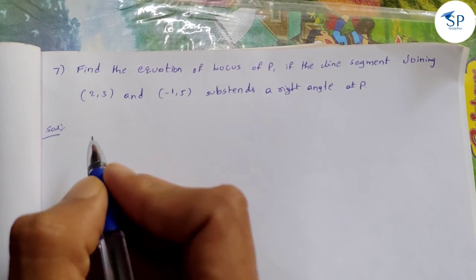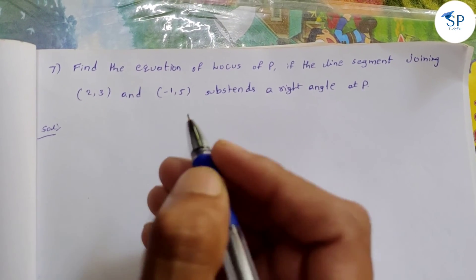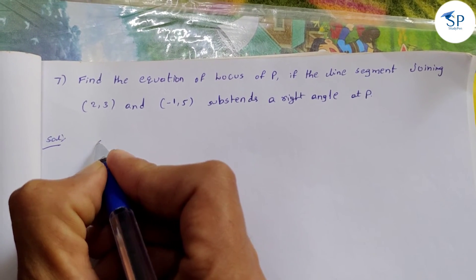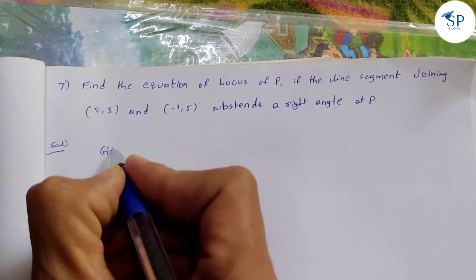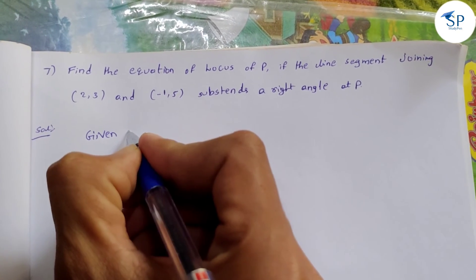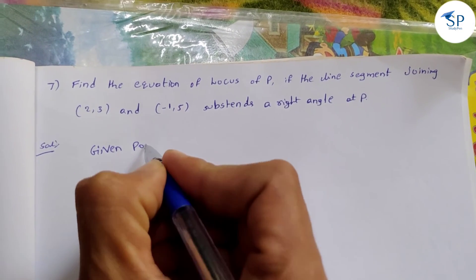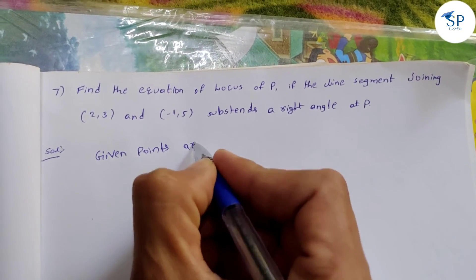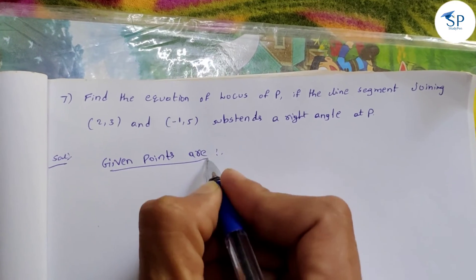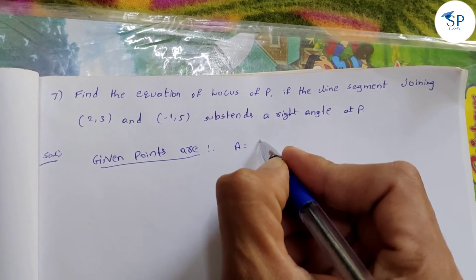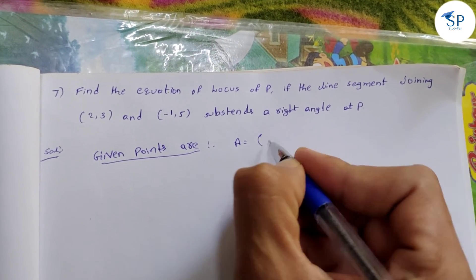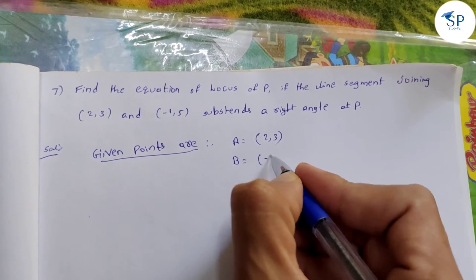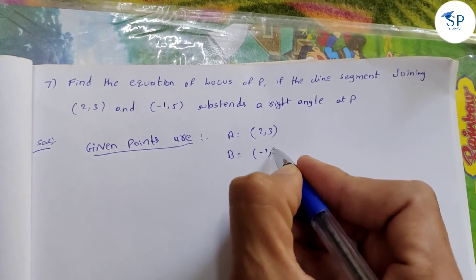So first, let's look at the solution. The first step is the given points. We have given points: A is equal to (2,3) and B is equal to (-1,5).